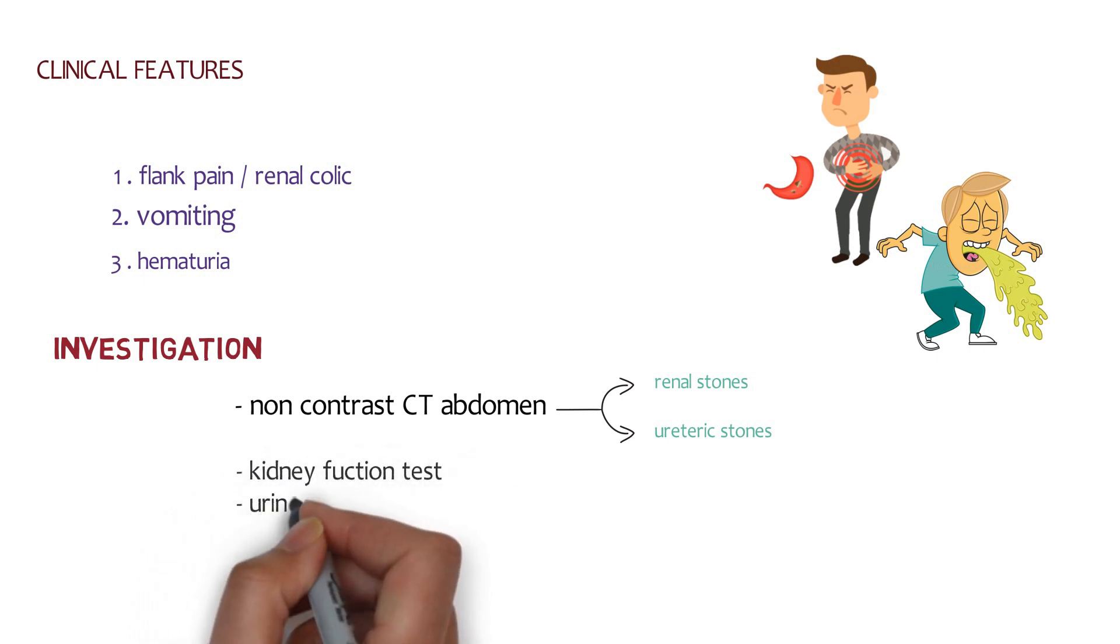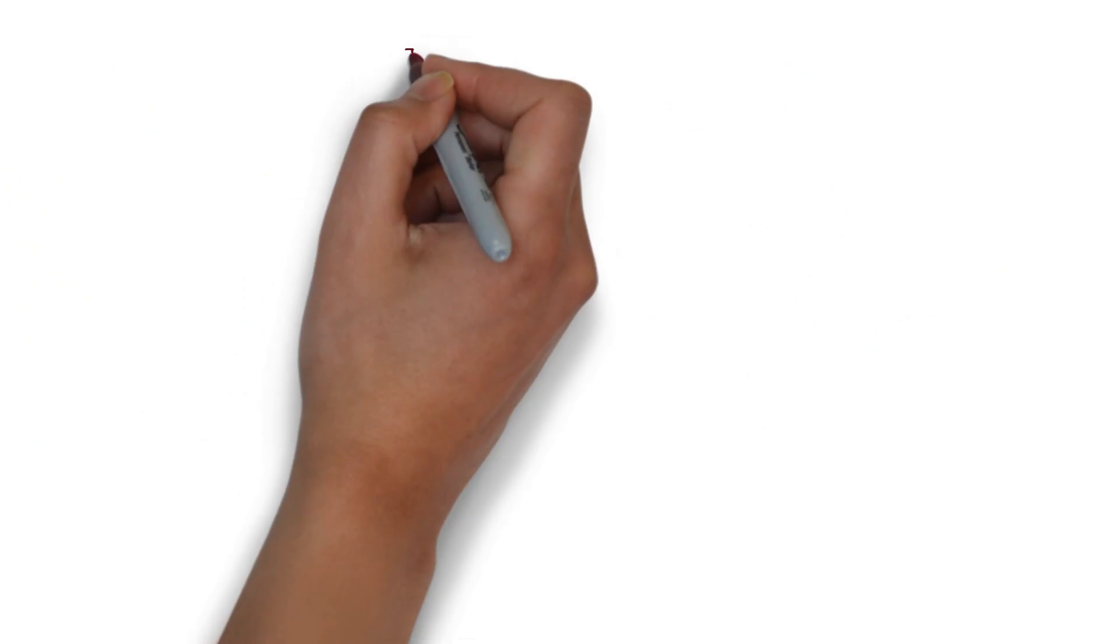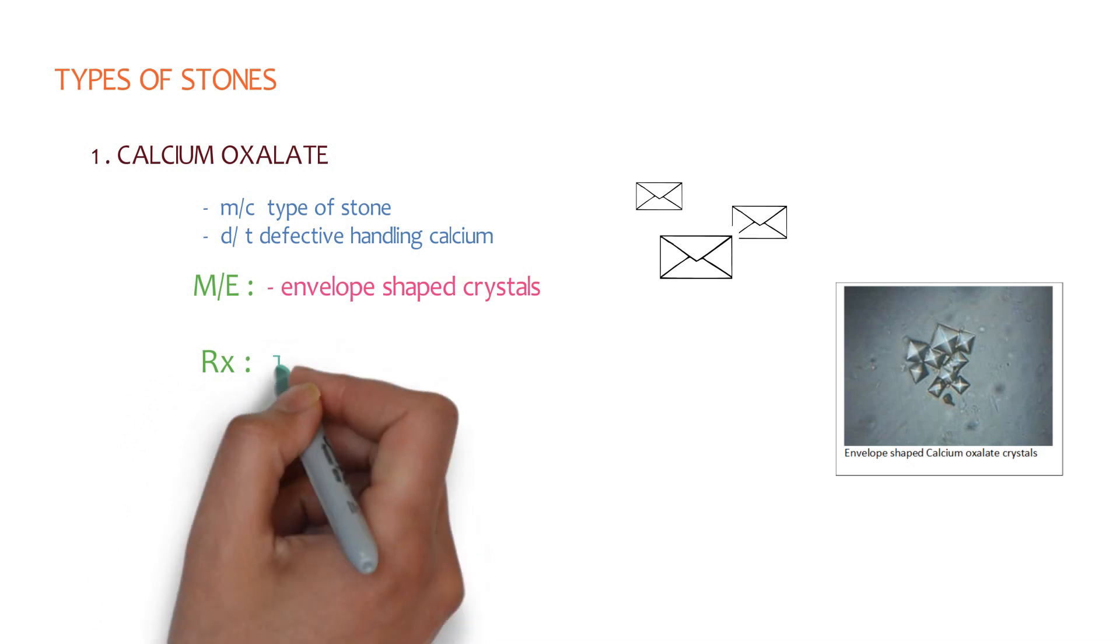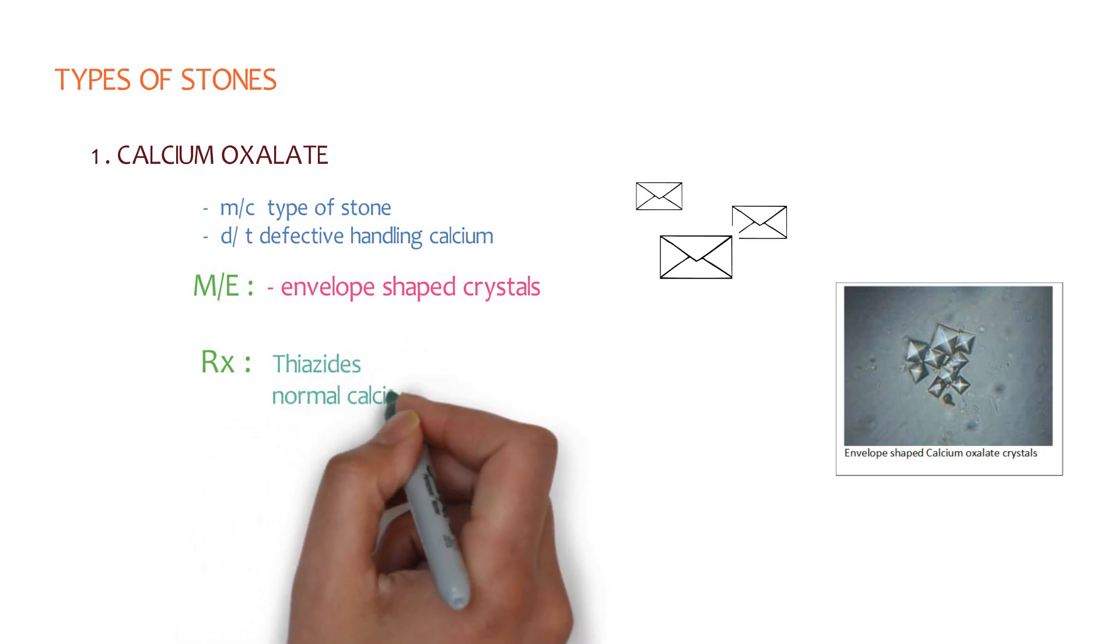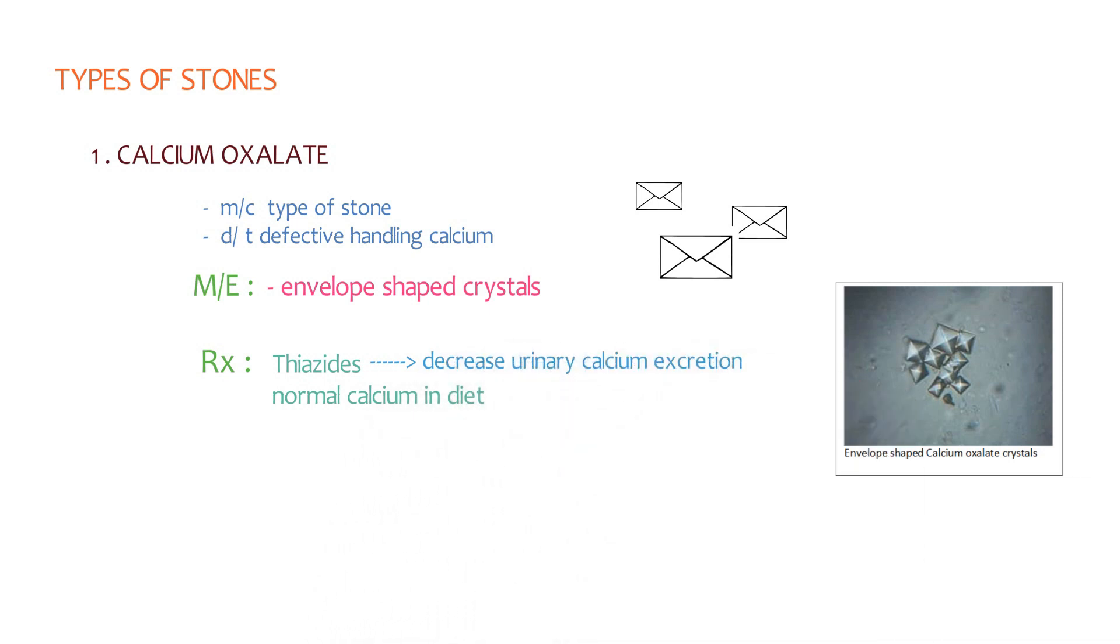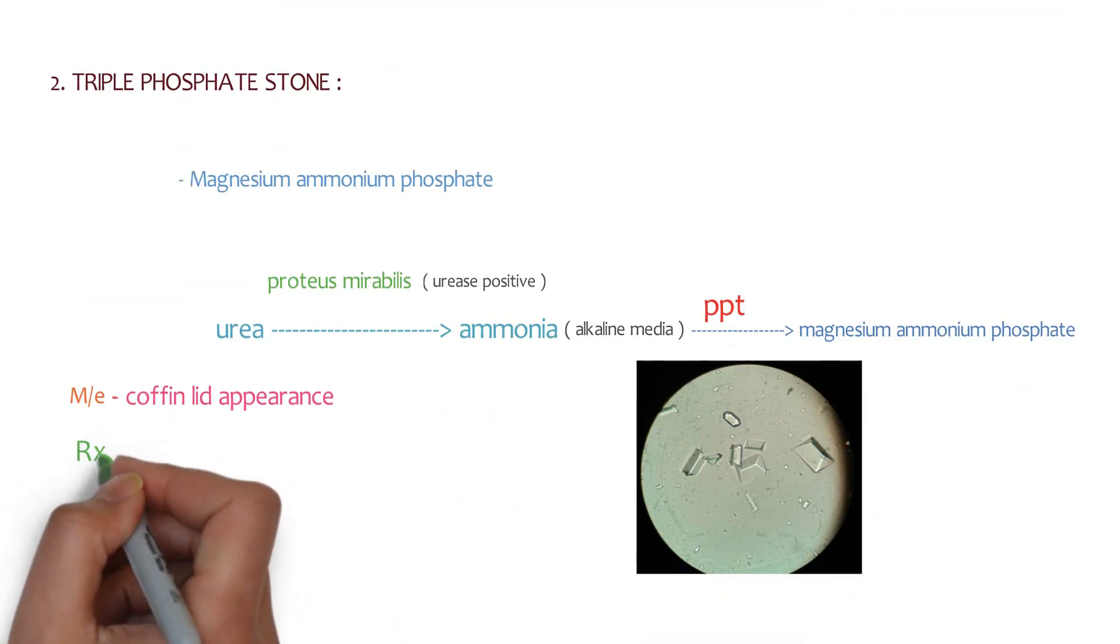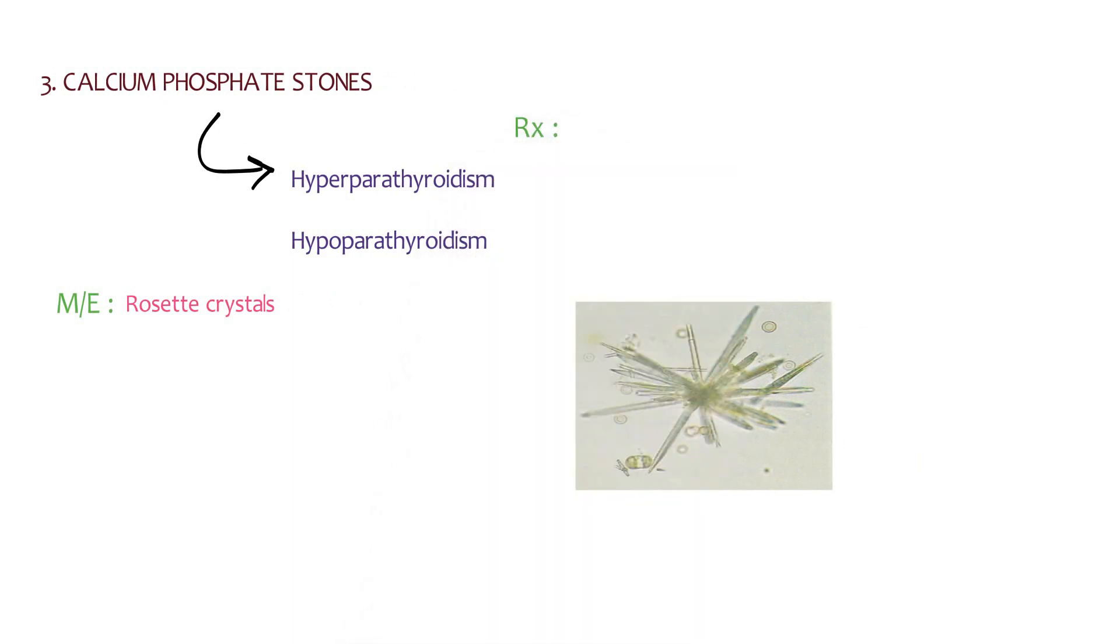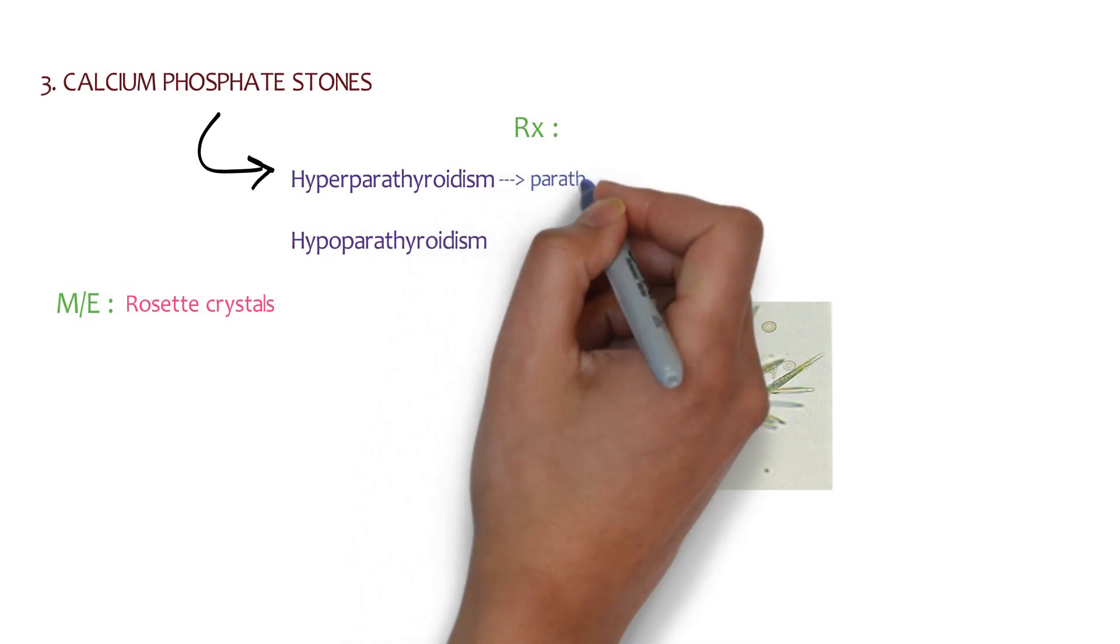Moving toward treatment, first we discuss calcium oxalate stones, in which there is defective handling of calcium. We can treat it by giving thiazide, which decreases urine calcium excretion, and we can also suggest a normal calcium diet to the patient. Second one is triple phosphate stone. This occurs due to the bacteria Proteus mirabilis, so we can give antibiotics to the patient. The third one is calcium phosphate stone, and it is seen in hyperparathyroidism and hypoparathyroidism.